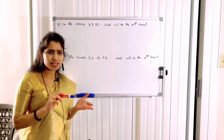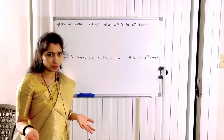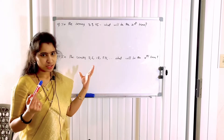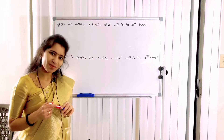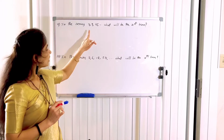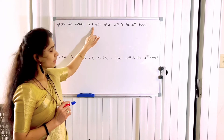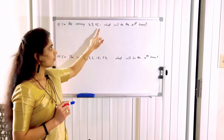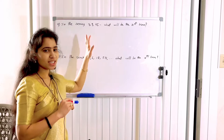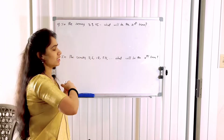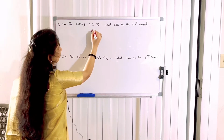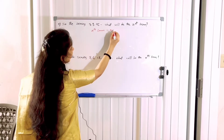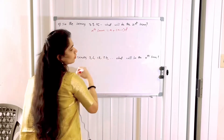First, we identify the series. Arithmetic Progression series or Geometric Progression series? The difference between 3 and 9 is 6. The difference between 9 and 15 is 6. Since the difference is the same, this is an Arithmetic Progression series. For an Arithmetic series, the nth term formula is: nth term = A + (N - 1) × D.